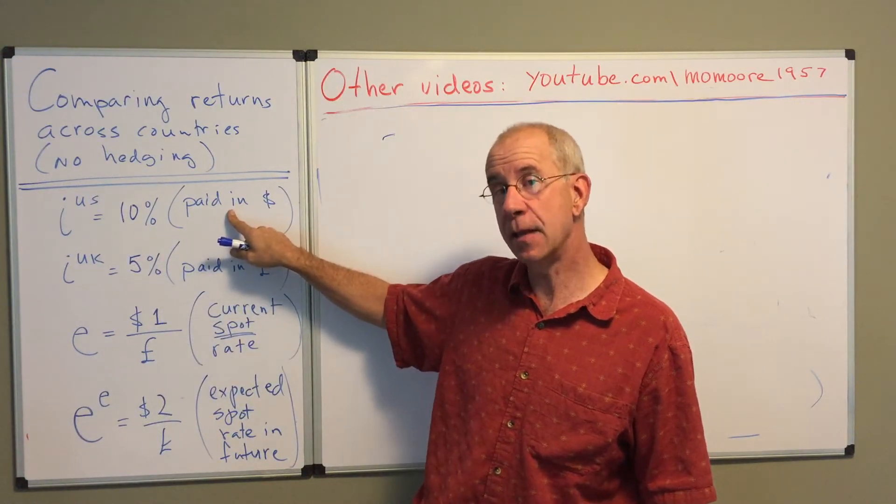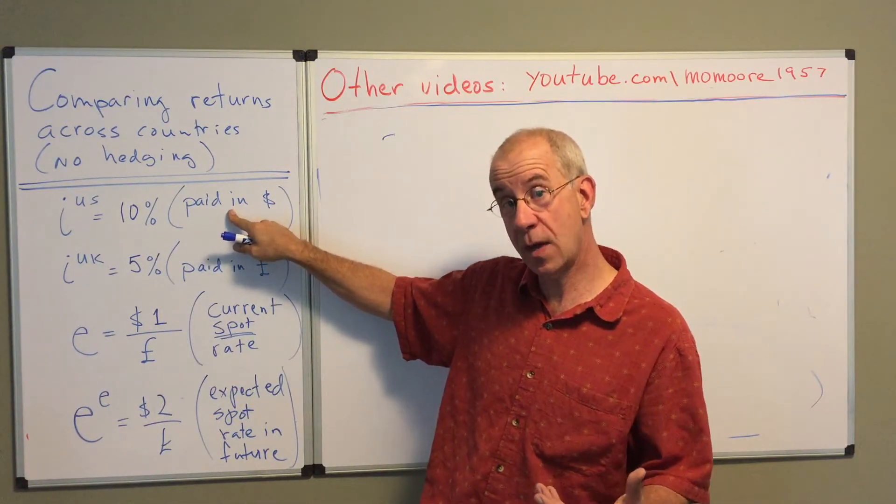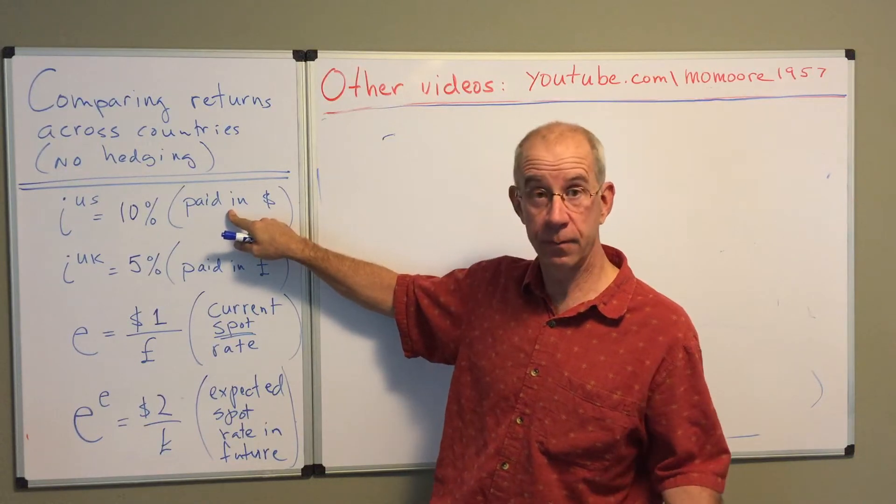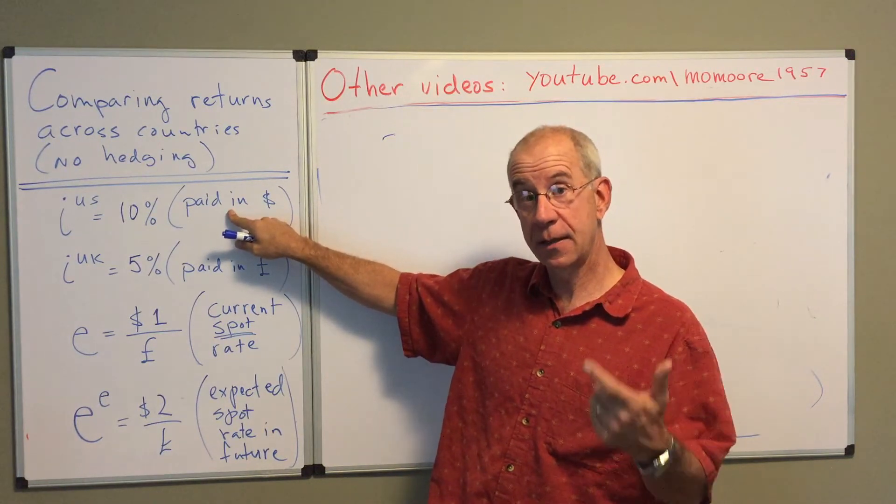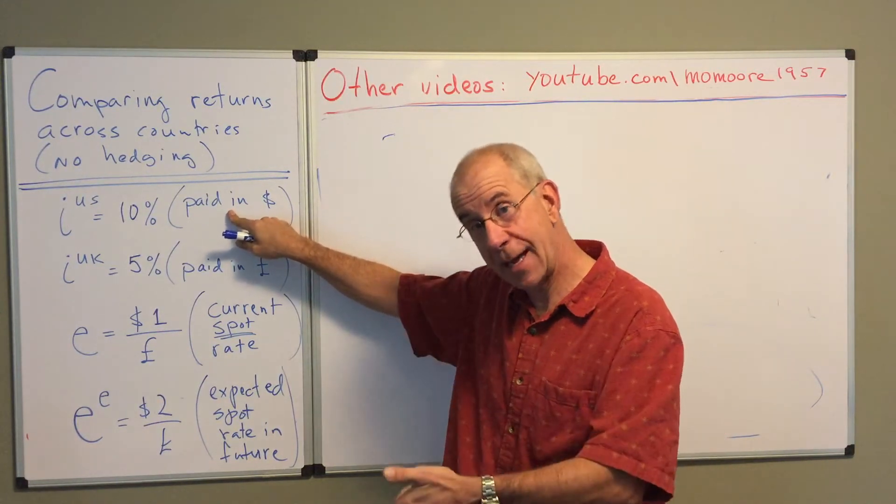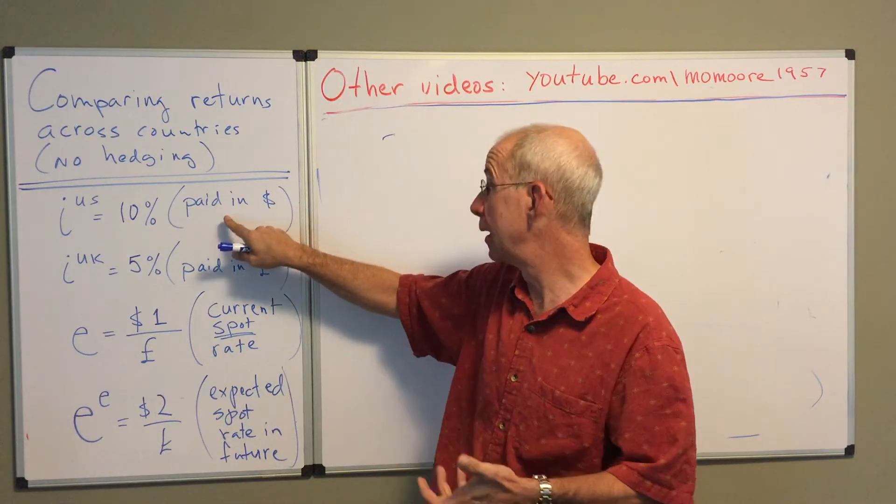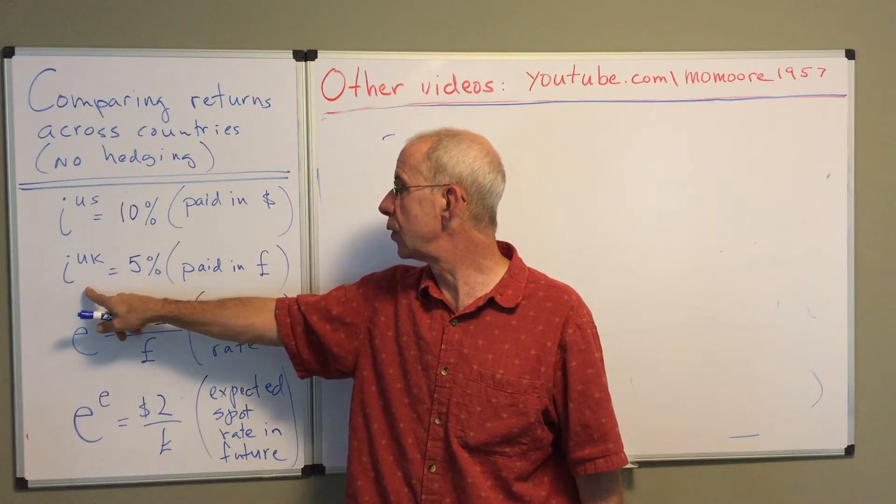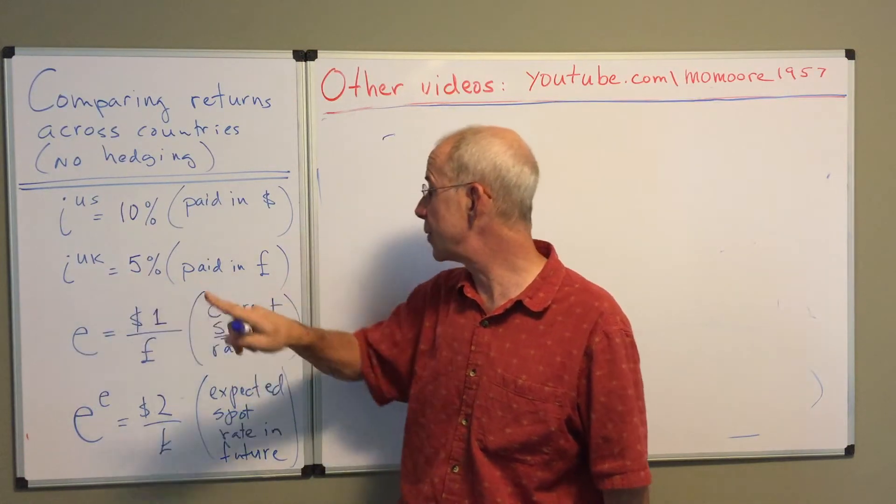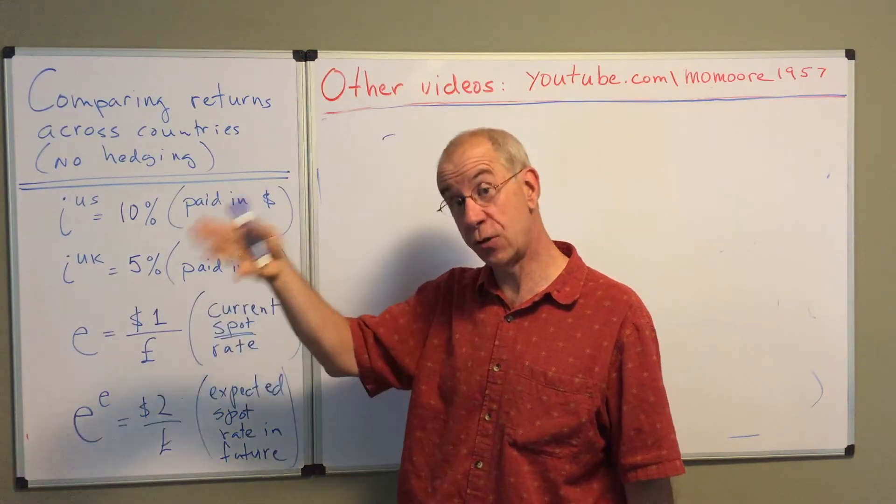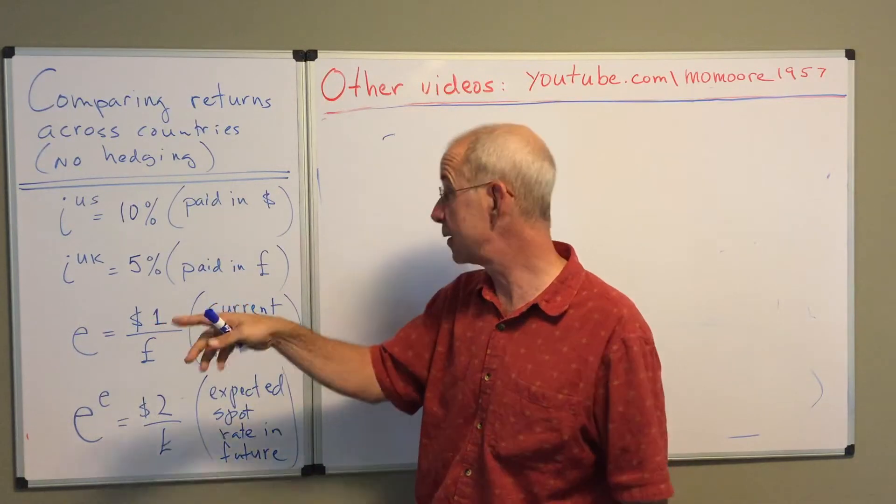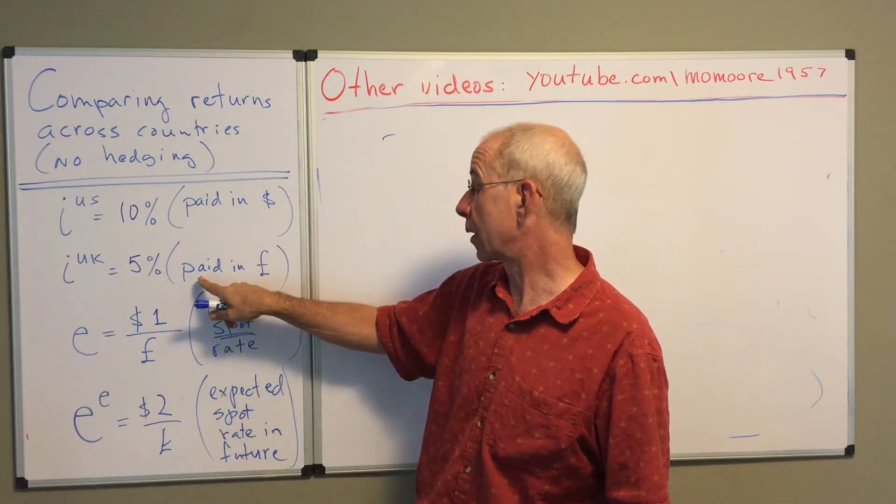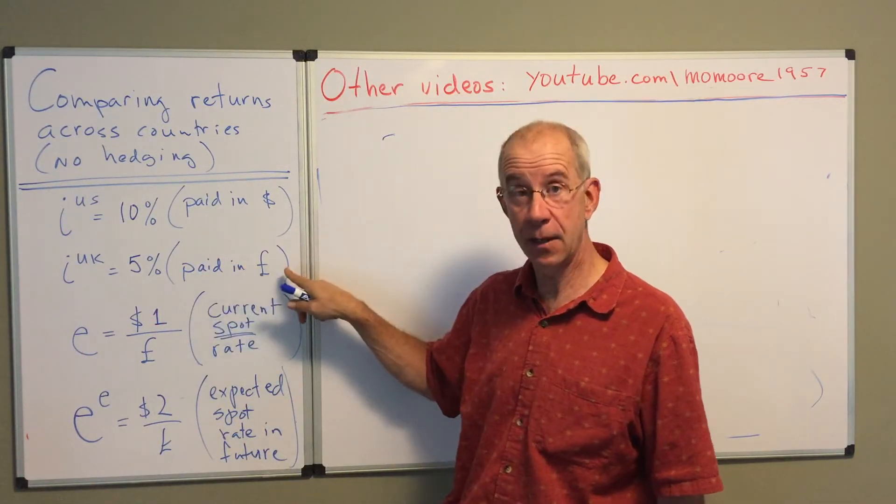Recall that this is paid in dollars. If someone buys a U.S. Treasury from the U.S. government, the Treasury promises to pay the holder of that bond interest in dollars. The U.K. interest rate, five percent, is issued by the U.K. Central Bank or government, and that's paid in pounds.